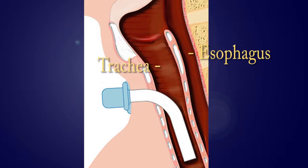When your child breathes out, air comes out of the tracheostomy tube. Your child can still also breathe in and out through his or her nose.